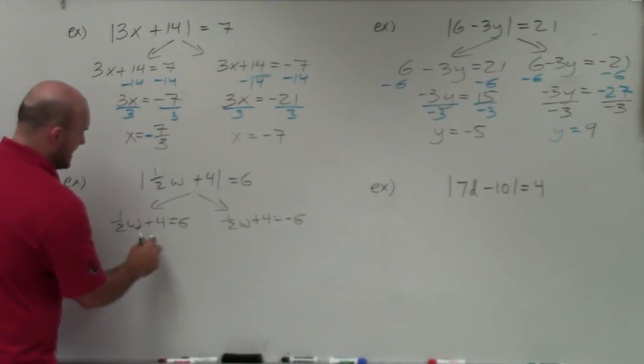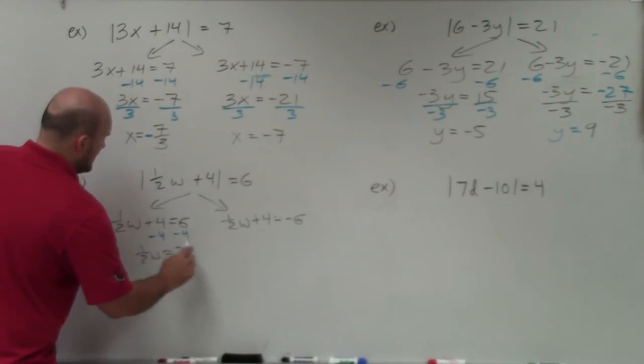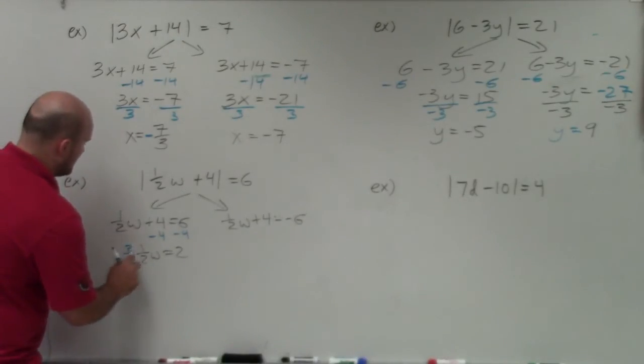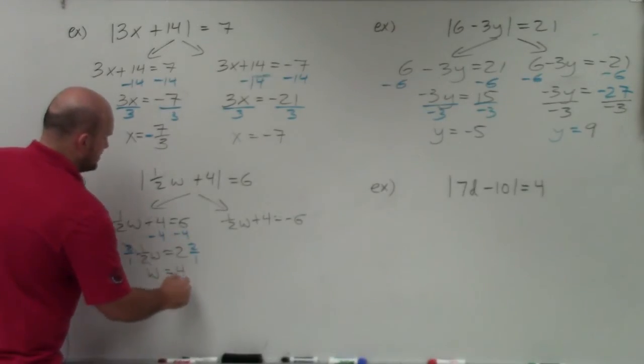Use your inverse operations. My w is being added by 4, so I'm going to subtract 4 on both sides. Now, to get rid of a fraction, if you remember, the best way to do it instead of dividing by a fraction is to multiply by the reciprocal. That gives my w by itself. 2 times 2 over 1 is just going to be 4.